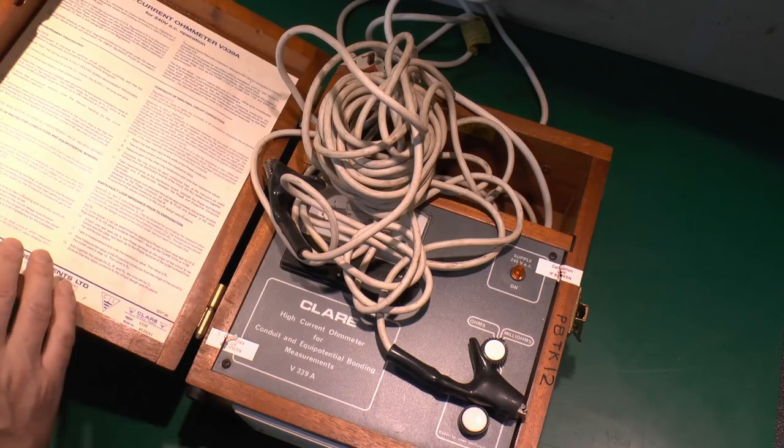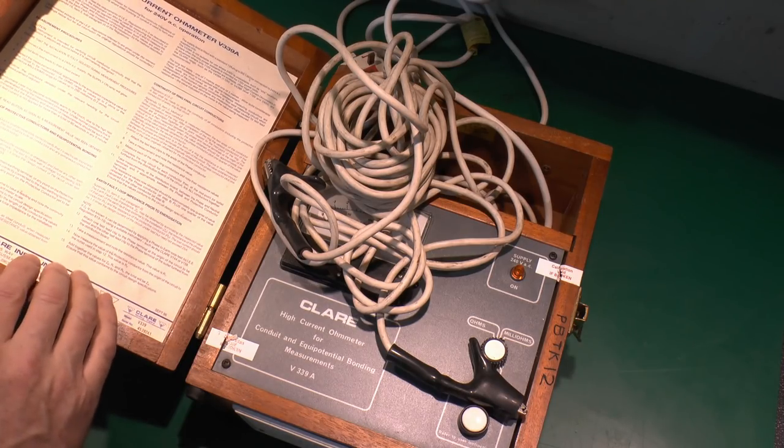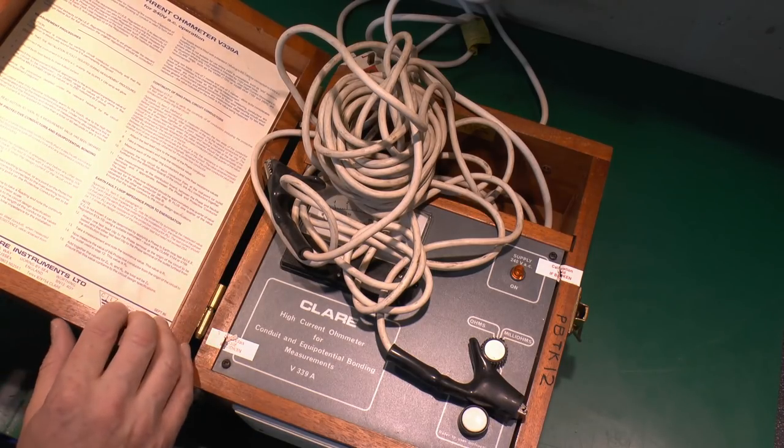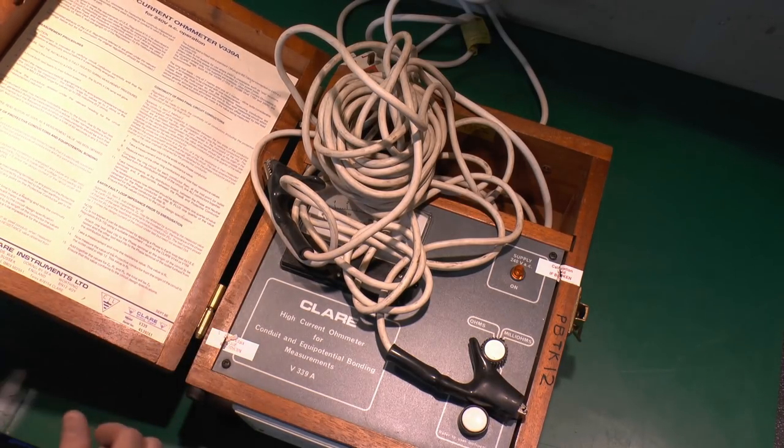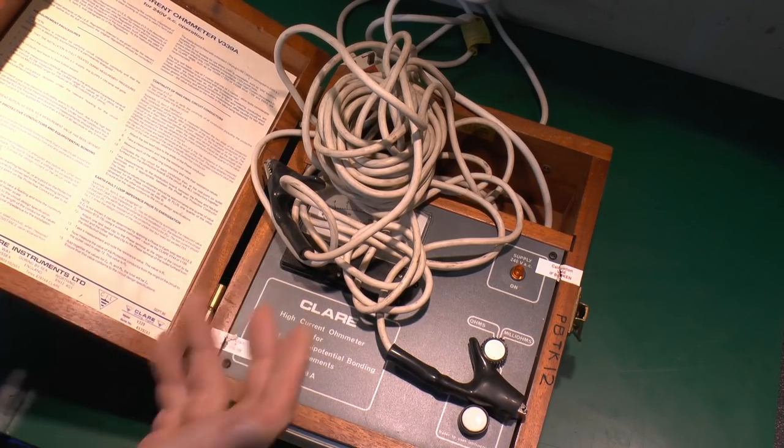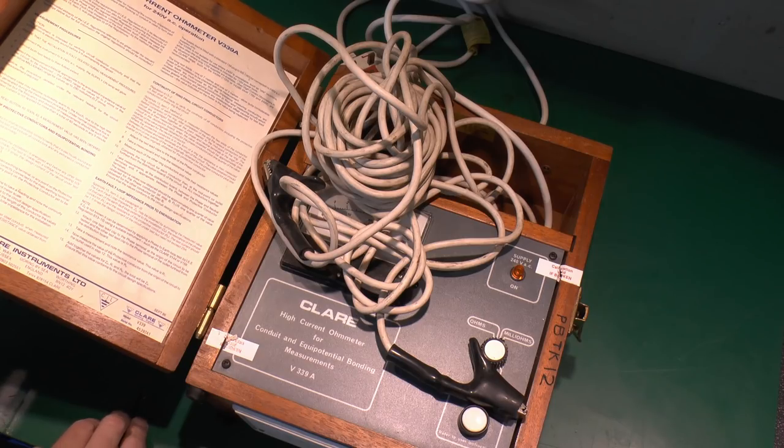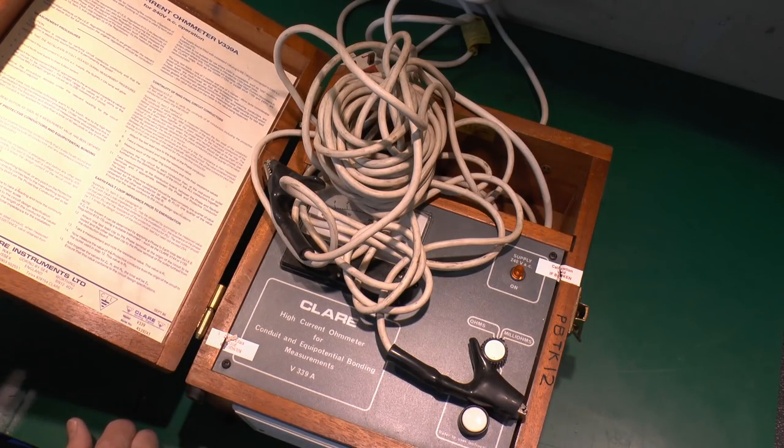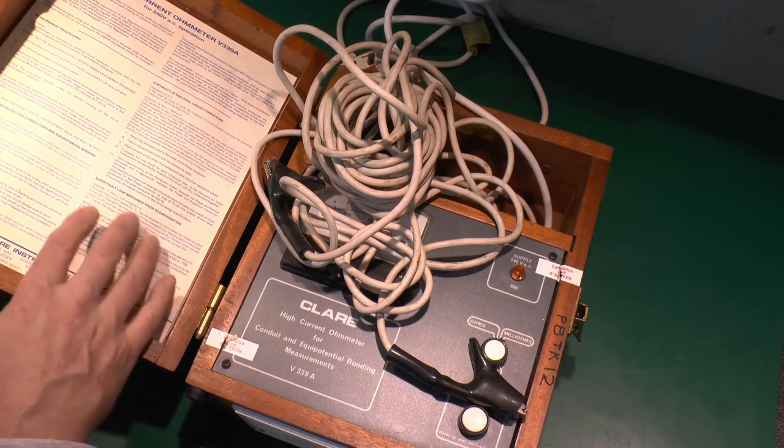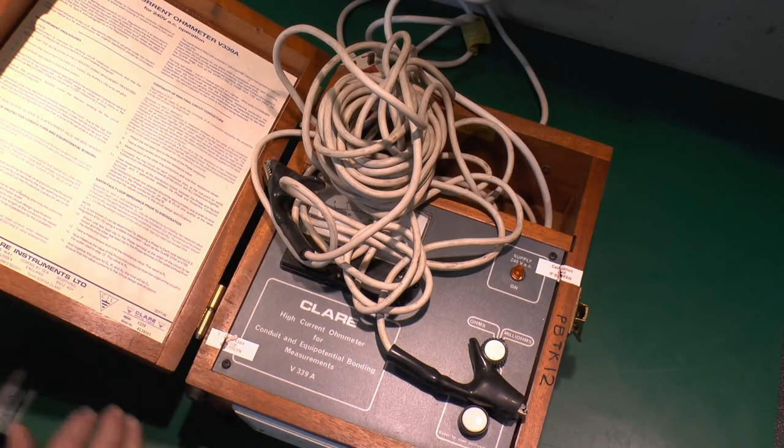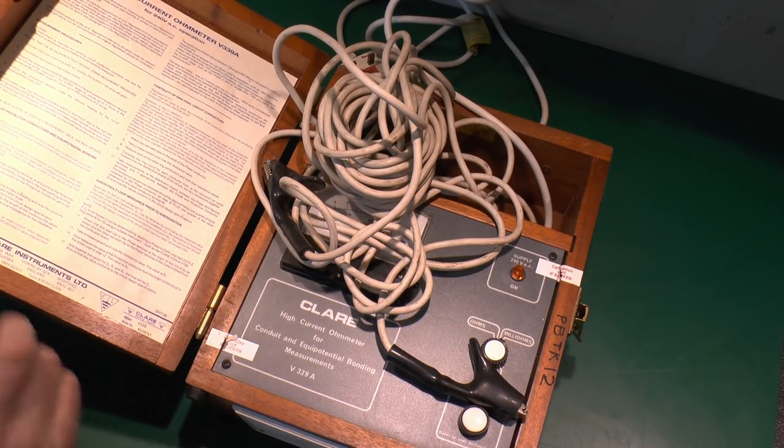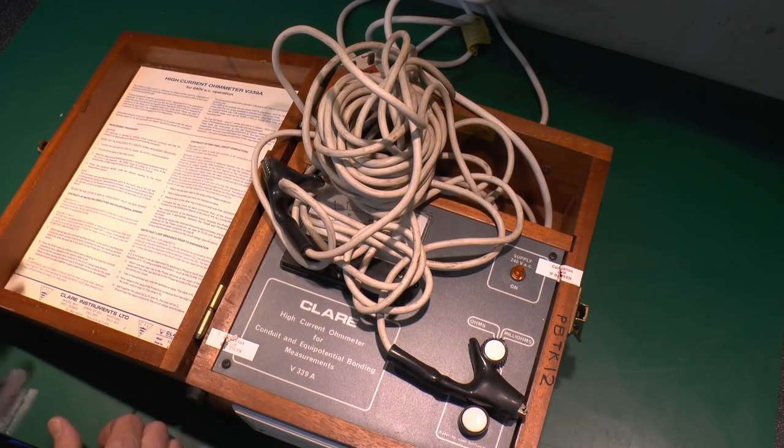The instructions here generally refer to things like confirming the continuity of protective conductors and bonding conductors, and also for ring final circuit conductors, which is that deal where you have the circuit in a big loop. Now I'll put at least a link to these instructions in the description to this video, so if you do want to read those, then you can find a link there rather than trying to read it from the screen of the video here.